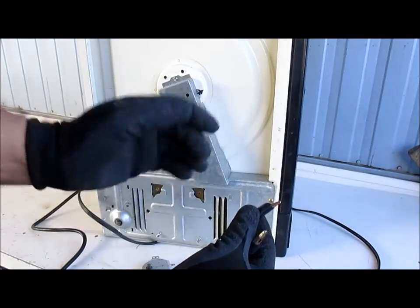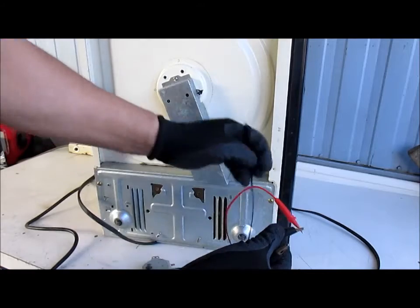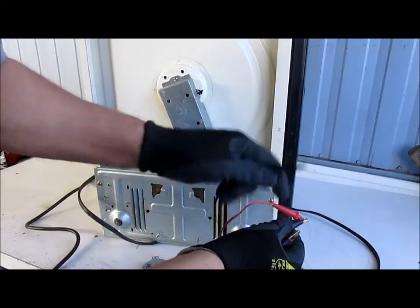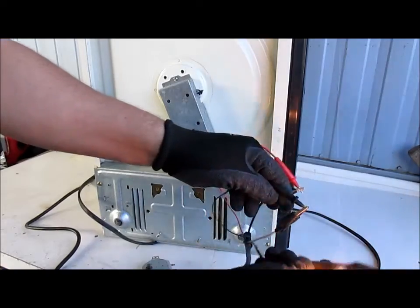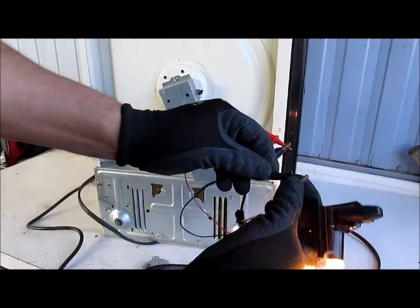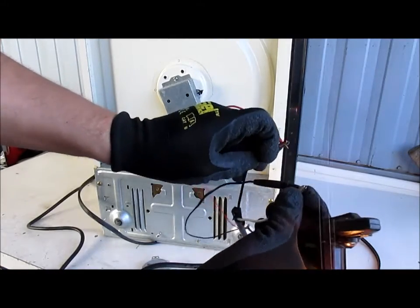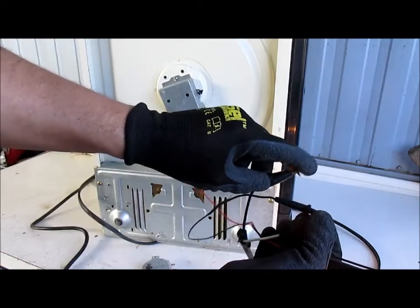Vamos a ponerle aquí una lámpara de 120 voltios a las pinzas de cocodrilo. Aquí tenemos. Ahora yo voy a agarrar aquí los cables, las pinzas de cocodrilo con los guantes. Como pueden ver, no tengo mayor problema.